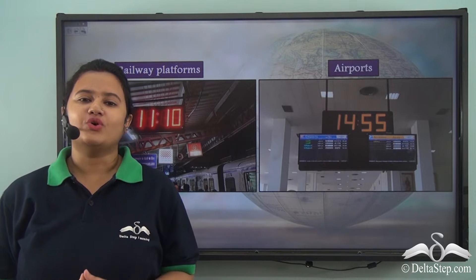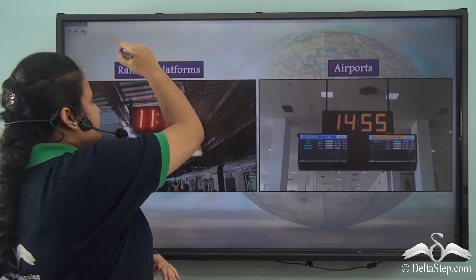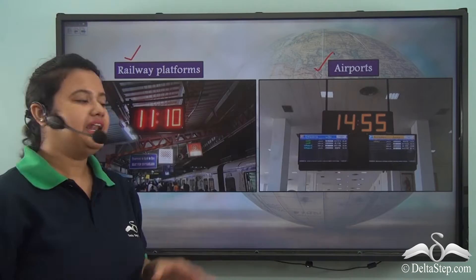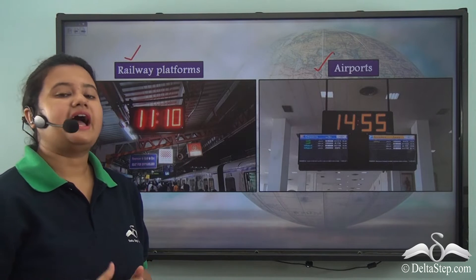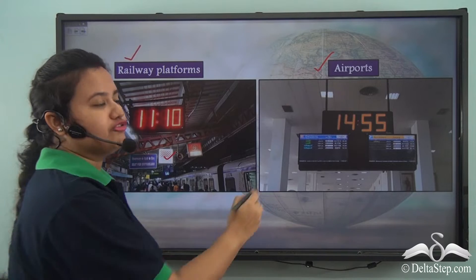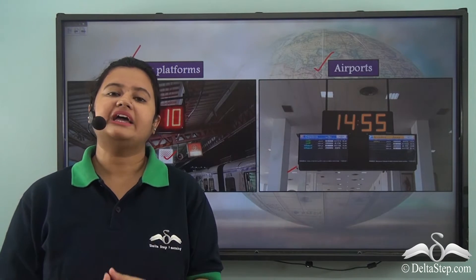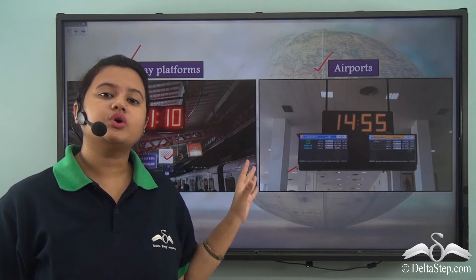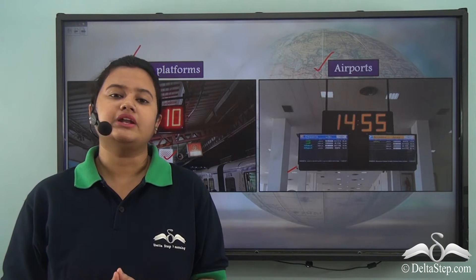I hope you all have seen these digital clocks in railway platforms or in airports. These digital clocks show the arrival and departure timings of trains or flights. The timings shown by these digital clocks are in accordance with the local time of a particular region. So, what is meant by local time?